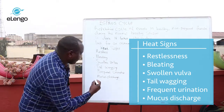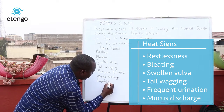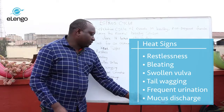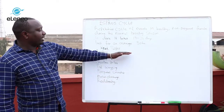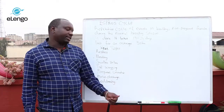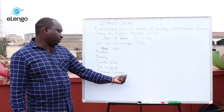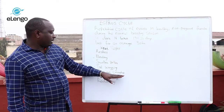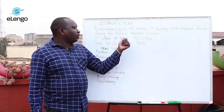Additional signs include reddening of the vulva. These are some of the signs that show the doe is ready to be served. Another sign is frequent urination, which is particularly notable in goats though it is not common in other animals. These are the signs that show the doe is ready to be served.